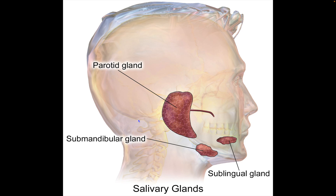Just like the Bethesda thyroid system, the Milan system has exceptions where even if you have less than 60 cells, it can be deemed adequate. These include any atypia, mucinous cysts without epithelium — because that could represent a sinister pathology like a low-grade mucoepidermoid carcinoma — abundant inflammation, and matrix suggestive of neoplasm. Such tumors include adenoid cystic carcinoma, basal cell adenoma, adenocarcinoma, epithelial myoepithelial carcinoma, and pleomorphic adenoma.